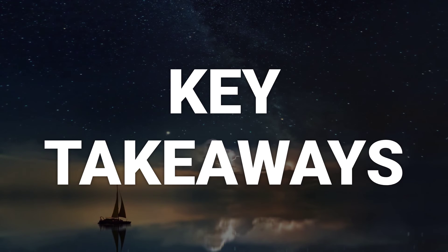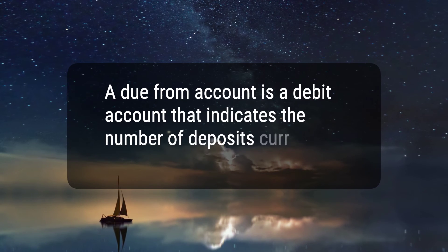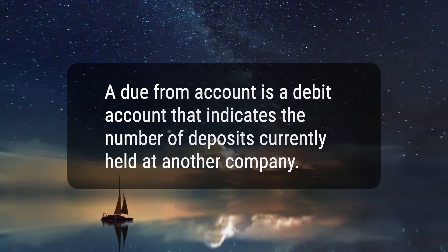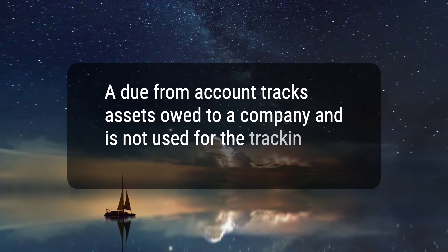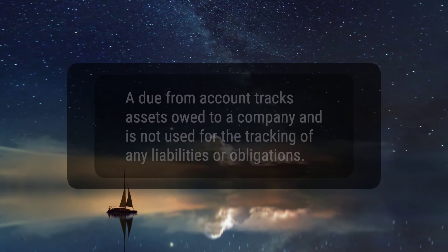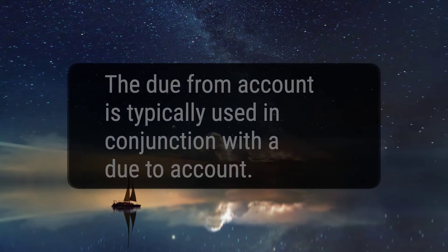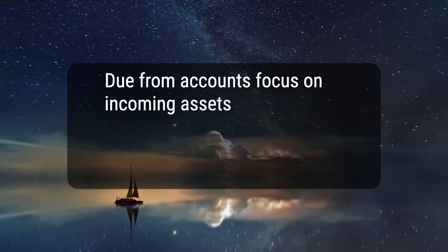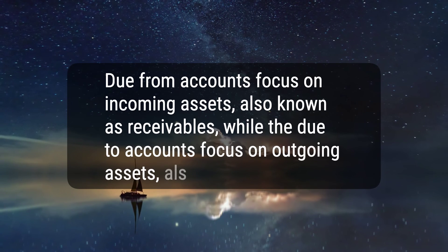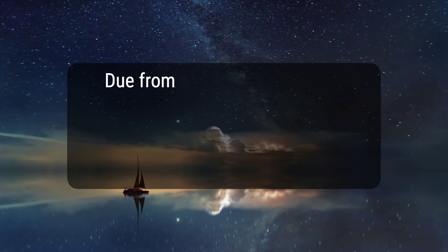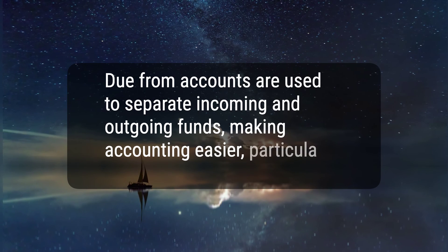Here are seven key takeaways. One, a due from account is a debit account that indicates the number of deposits currently held at another company. Two, a due from account tracks assets owed to a company and is not used for the tracking of any liabilities or obligations. Three, the due from account is typically used in conjunction with a due to account. Four, due from accounts focus on incoming assets, also known as receivables, while due to accounts focus on outgoing assets, also called payables. Five, due from accounts are used to separate incoming and outgoing funds, making accounting easier, particularly for audits.